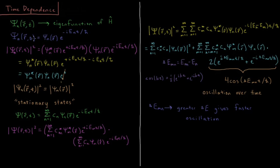So the probability density as a function of time is just the probability density of our spatial wave function. That's why we call these eigenfunctions of the Hamiltonian stationary states — because they do not move over time; they remain in place with a constant probability density. We'll look into this more in the next video with animations, which will make clear what these complex exponentials do and how these end up being stationary while their real and imaginary parts still move over time.